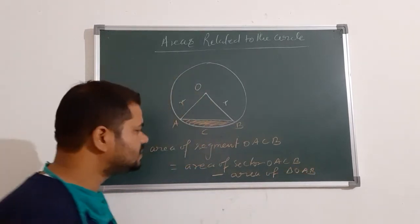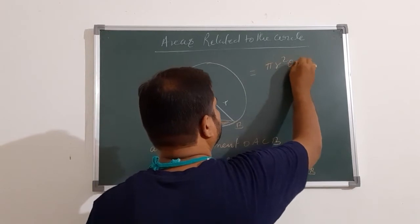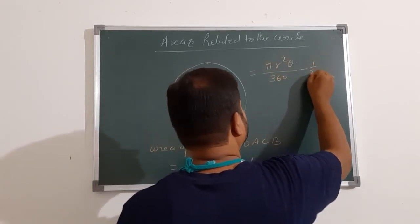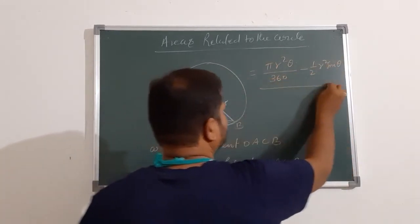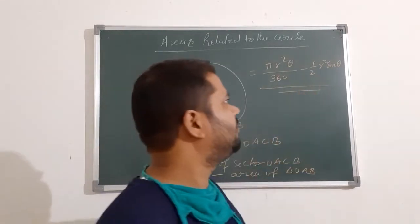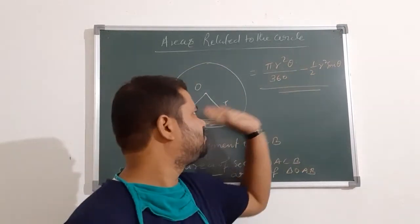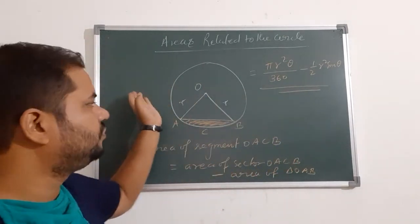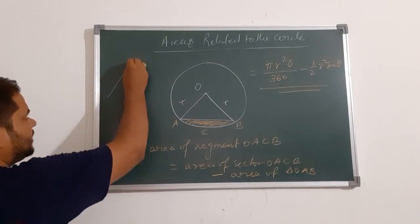And this is nothing but. So, this is the area. Area of segment is θ/360 × πR² minus ½R² sin θ. How will we get this area of triangle? I am just going to prove here. Speak carefully.